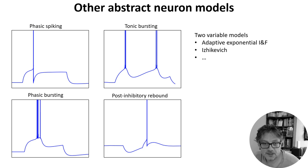You can capture a lot of these effects with two variable models, such as the adaptive exponential integrate and fire or the Izhikevich neuron models.